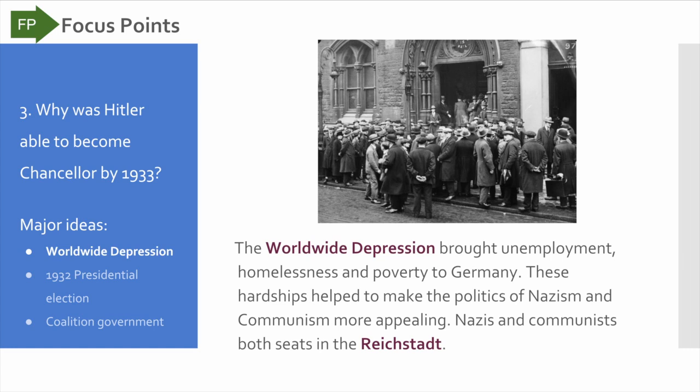Focus point number three: why was Hitler able to become chancellor by 1933? First and foremost, the worldwide depression did not only affect the United States, but essentially all the world. When the economy started going down in Germany, this helped to show that the Nazi Party could possibly turn that around. Topic sentence: The worldwide depression brought unemployment, homelessness, and poverty to Germany. These hardships helped to make the politics of Nazism and Communism more appealing. Nazis and Communists both won seats in the Reichstag during this time period.